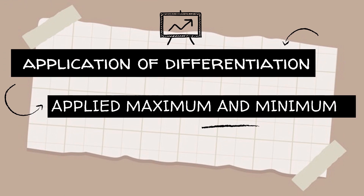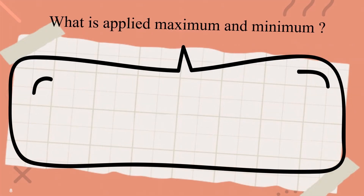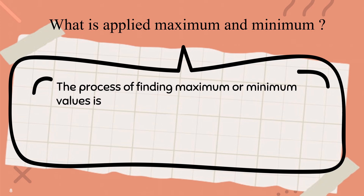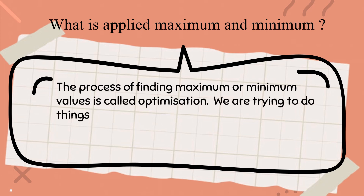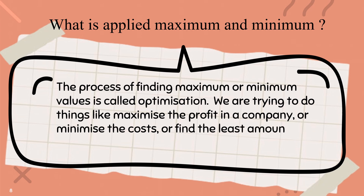We are going to present a sub-topic from application of differentiation, which is applied maximum and minimum. Applied maximum and minimum is the process of finding maximum or minimum values, called optimisation. We are trying to do things like maximize the profit in a company or minimize the cost.